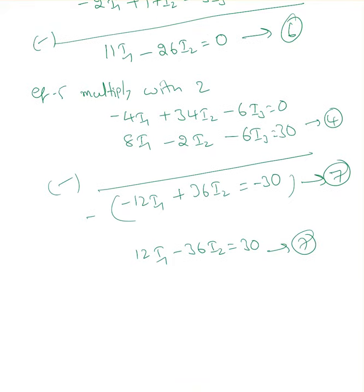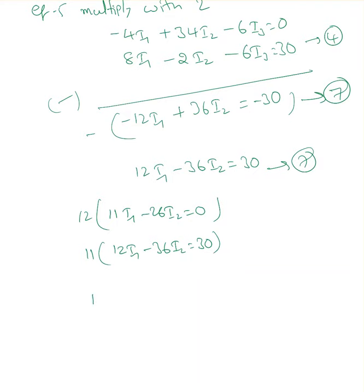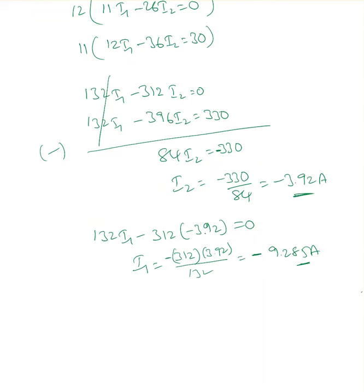Now solve equations 6 and 7. Equation 6: 11I1 minus 26I2 equals 0. Equation 7: 12I1 minus 36I2 equals 30. Multiply equation 6 by 12 and equation 7 by 11, then subtract to eliminate I1: 132I1 minus 312I2 equals 0 minus 132I1 minus 396I2 equals 330. Solving: I2 equals minus 3.92, and substituting back gives I1 equals minus 9.285 amperes.